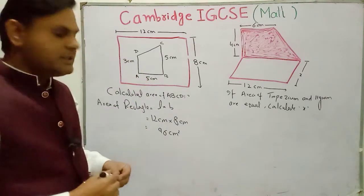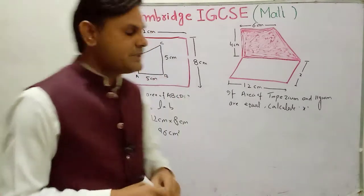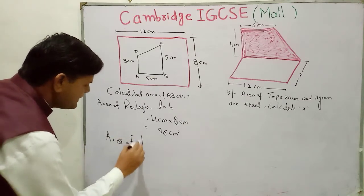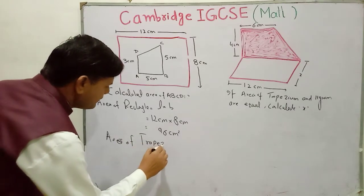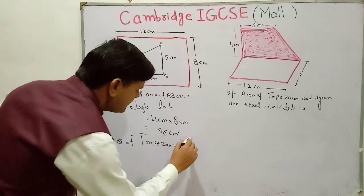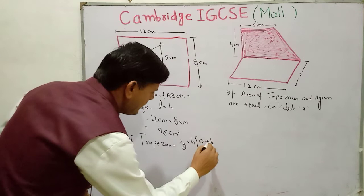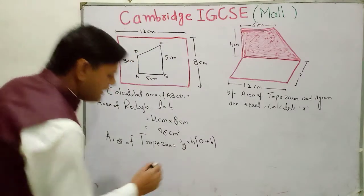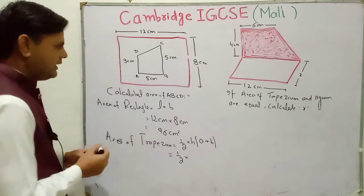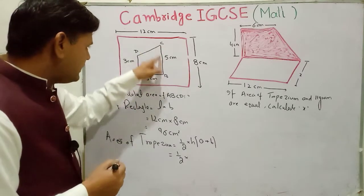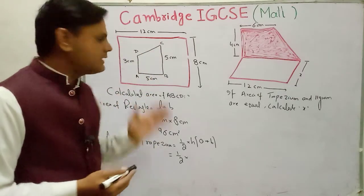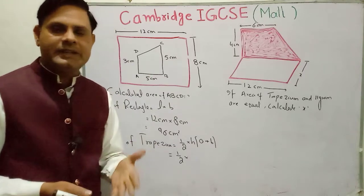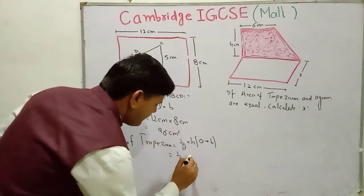This second shape is a trapezium. In the previous lecture I told you the general rule for how to find the area of a trapezium. Area of trapezium is equal to ½ × height × (a + b), where a and b are the two parallel sides. The height here — you take the higher length. Three centimeters is also a height and five centimeters is also a height, but you take the highest value, so height is five centimeters.